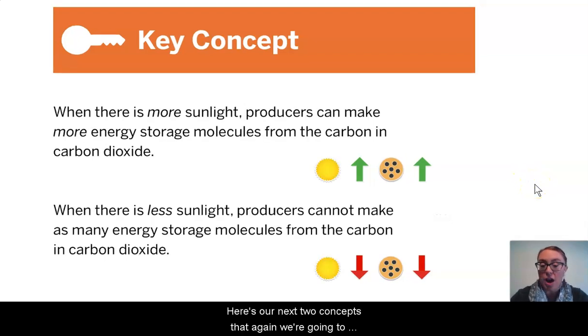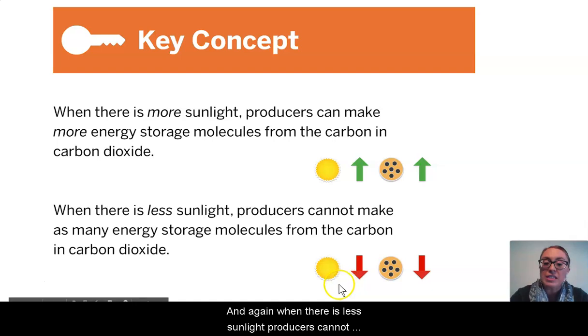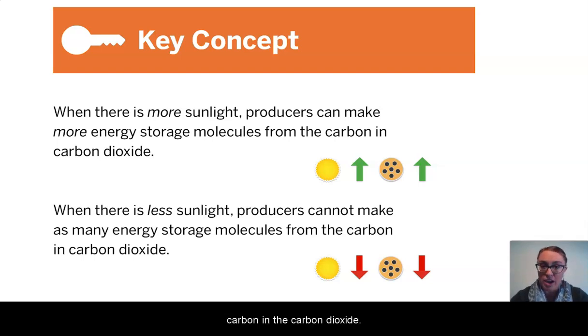Here's our next two concepts that we're going to write down on our paper. Pause the video to give yourself time to do that. And again, I encourage you to record the image as well, because that helps us connect what we're seeing in these ideas to our sim and our models. So our third key concept for today states that when there is more sunlight, producers can make more energy storage molecules from the carbon in carbon dioxide. And when there is less sunlight, producers cannot make as much energy storage molecules from the carbon in the carbon dioxide.